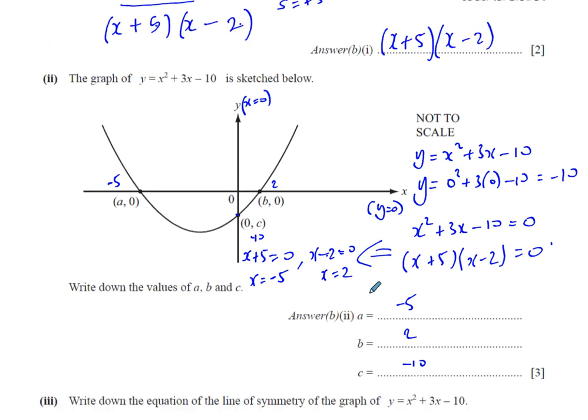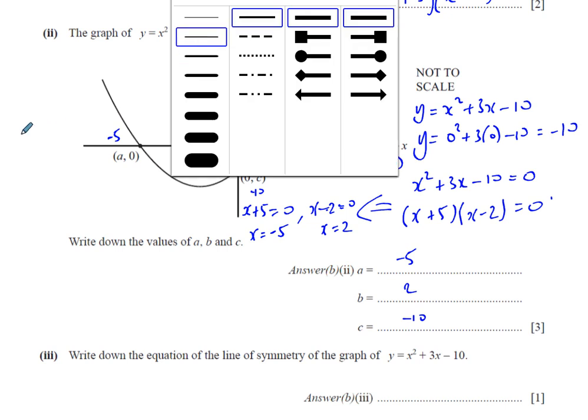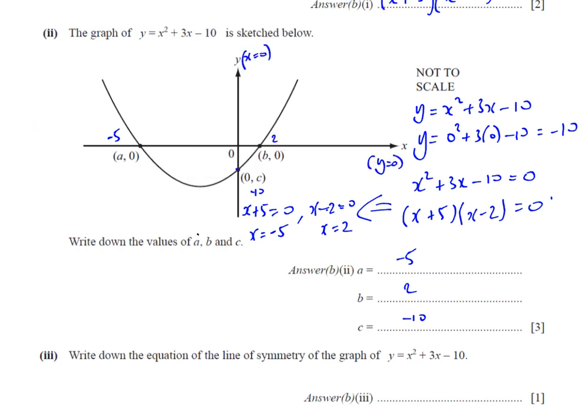Now b part 3 says write down the equation of the line of symmetry of this graph. Lines of symmetry can be found in multiple ways. However, as we already have done most of the work in terms of finding where it crosses the x axis, in that case, it's easiest for us to do as follows.